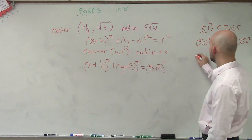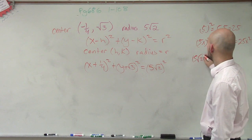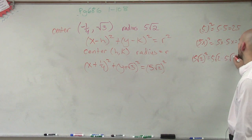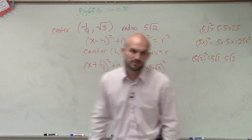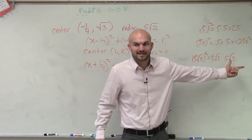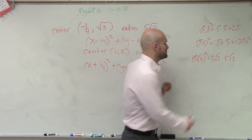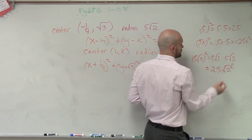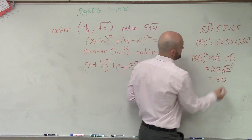So 5 square root of 2 squared, that just equals 5 square root of 2 times 5 square root of 2. Well, remember you can multiply radicals, you can multiply the radicands and radicals. So therefore, this becomes 25 square root of 2 squared, which equals 50.